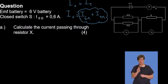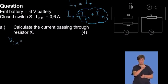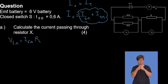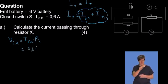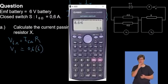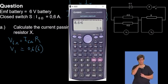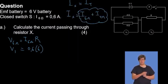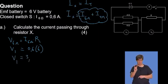V across six ohms equals the current through six ohms multiplied by the resistance. So the current for six ohms is 0.6 multiplied by six. Going to our calculator: 0.6 multiplied by six gives us 3.6 volts. So V1, which is our V parallel, equals 3.6 volts. In other words, V across four ohms is the same as V across six ohms, which is V1.